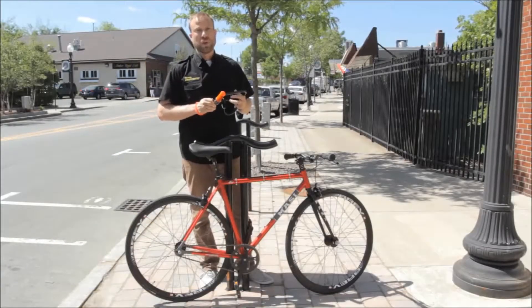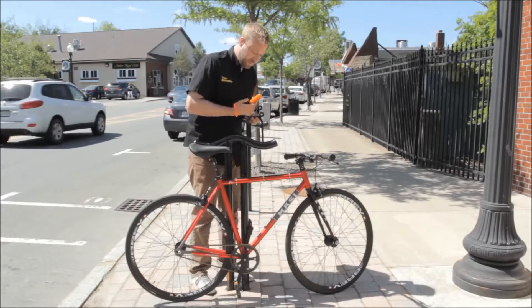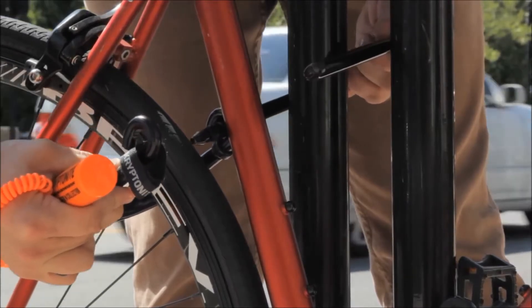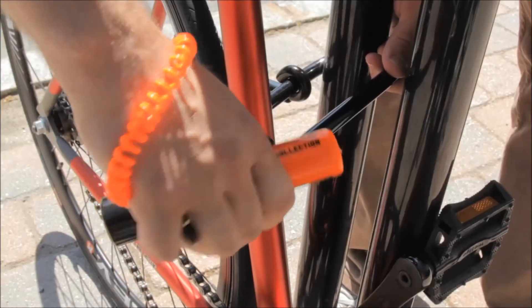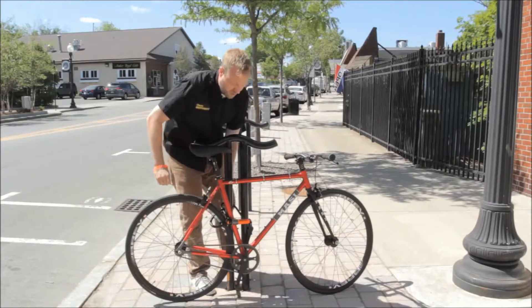Once you've found yourself an immovable object and you're ready to lock up, you want to take the wheel extender off, capture the rear wheel with that. You want to make sure the main shackle captures both the immovable object, the frame, and you just want to put your crossbar back on, lock it up, and you're good to go.